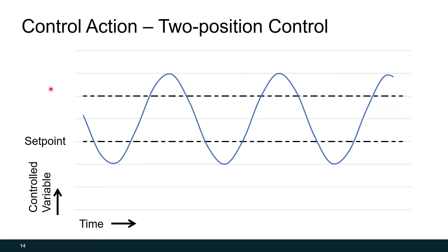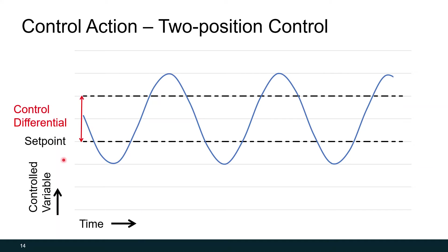Here's two-position control — a more realistic type of control sequence you'd see with an on-off device. The control point fluctuates much more. You'll also notice there's a setpoint, and a second line above that setpoint representing the control differential. If we had no control differential and just the setpoint, you'll notice in our example that we would be turning our equipment on and off much more frequently.